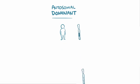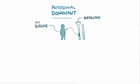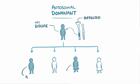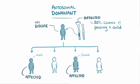Huntington disease is an autosomal-dominant genetic disorder, which means that one affected copy of the gene is enough to cause disease. Affected people are typically present in each generation because an affected person, male or female, has a 50% chance of passing on the affected gene to a child, which causes that child to have the disease.